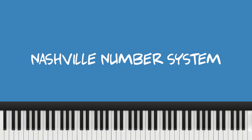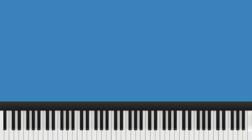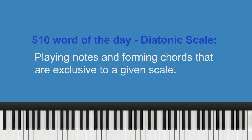Unfortunately, there's one issue a lot of beginners are unaware of. The numbers can represent completely different chords when played diatonically to a scale. A diatonic chord is a chord that is built using the notes of a particular key or scale. It consists of three or more notes played together, and the notes are chosen from a set of seven notes within the key — a major key.